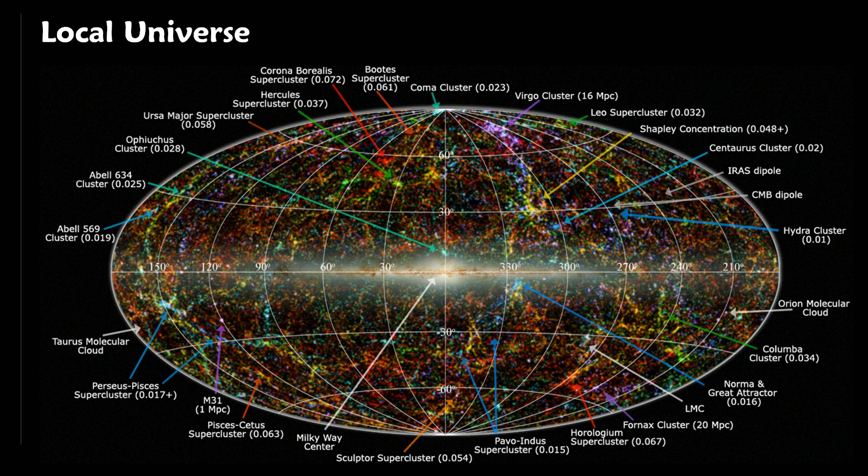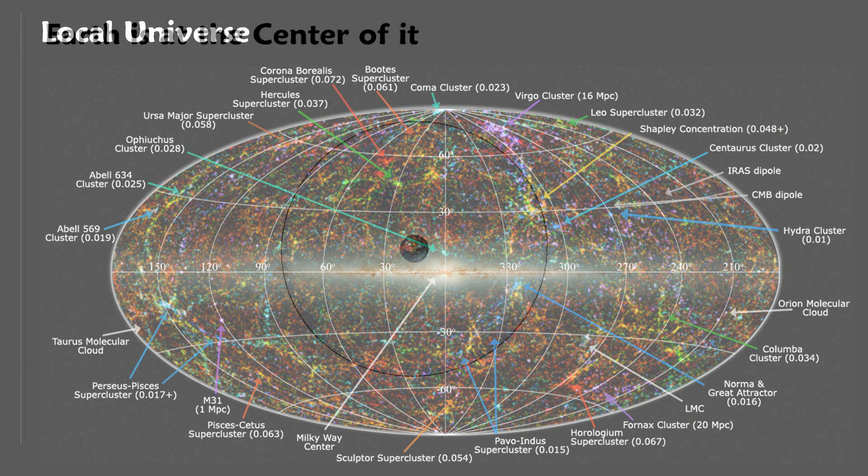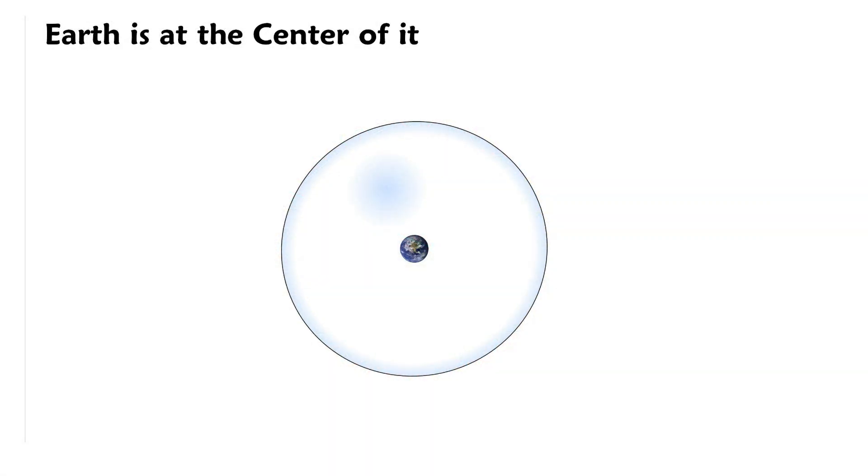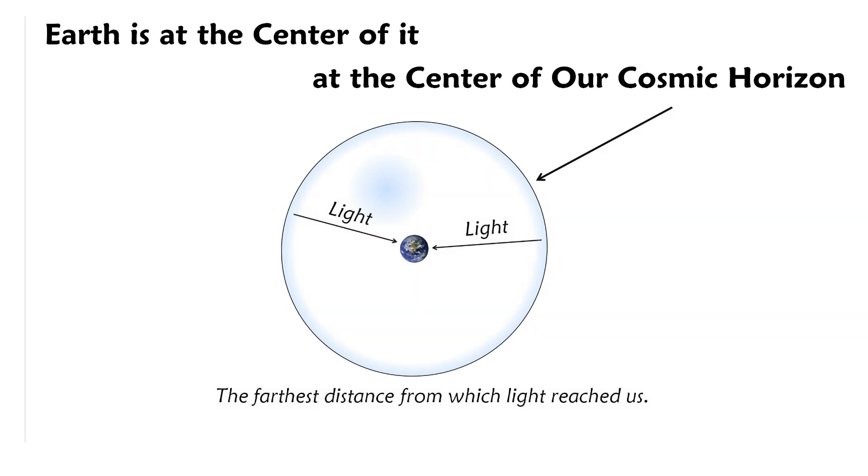From here, Earth is really small. But there's one quite special thing about it. Earth is exactly at the center of the universe. This universe is also called our cosmic horizon, a bubble as big as far we can see.